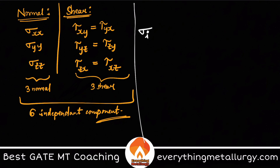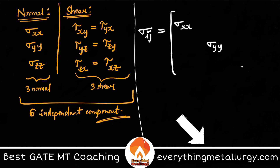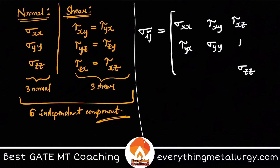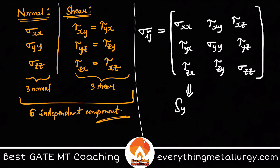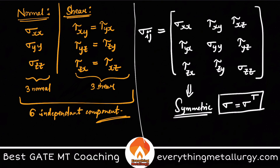The stress tensor is usually denoted by a matrix. Sigma i j written as a 3x3 matrix has sigma x x, sigma y y, sigma z z as the diagonal normal components, and tau x y, tau x z, tau y x, tau y z, tau z x, tau z y as the off-diagonal shear components. This is a symmetric matrix, meaning the stress tensor is symmetric — sigma equals sigma transpose.